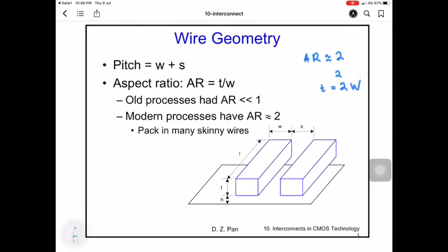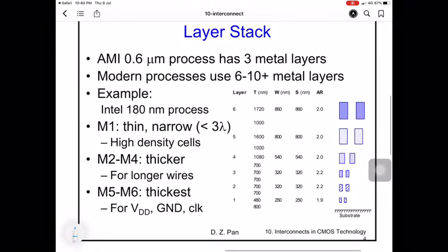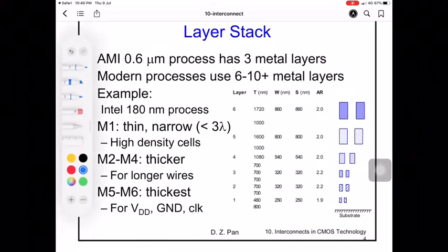Modern processes try to pack in as many skinny wires as possible. Here's an example of AMI 0.6 micrometer process which has three metal layers. Modern processes use 6 to 10 metal layers. In the Intel 180 nanometer process, metal one is the layer closest to the transistor.